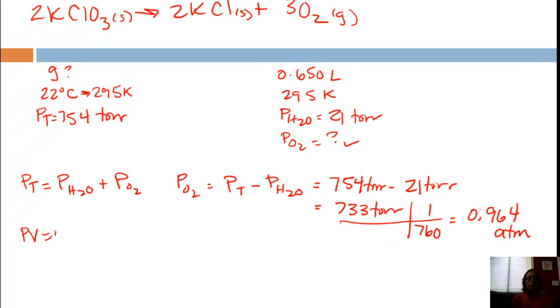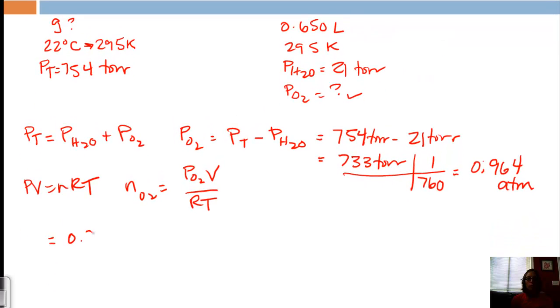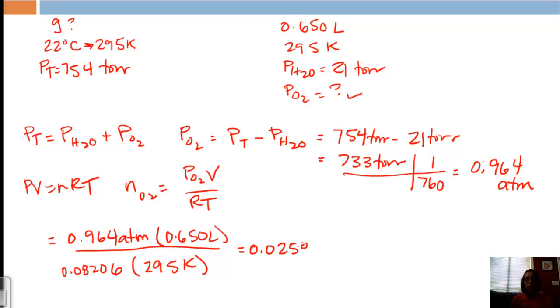So we're going to use PV equals nRT. We're solving for the number of moles of O2. And so that's going to equal pressure of O2 times volume over RT. So now if we plug in, our partial pressure of O2 is 0.964 atmospheres. Our volume was 0.650 liters. R is going to stay the same, 0.08206 liter atmospheres per mole Kelvin. And our temperature was 295 K. So I've calculated all this for you. We get 0.02588 moles. So now that's our moles of O2.